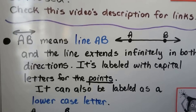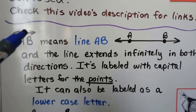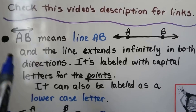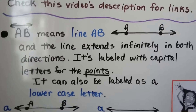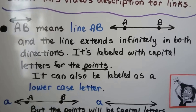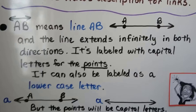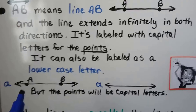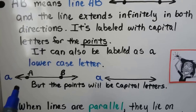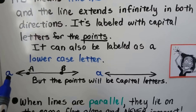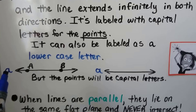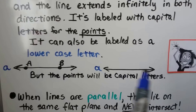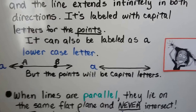When we see AB with the double arrow line on top of it, it means line AB. The A and B are the points on the line. The line extends infinitely in both directions like a number line, and it's labeled with capital letters for the points. The line itself can also be labeled as a lowercase letter, like P or Q or whatever it is. And then you'll see the points on it in capital letters.